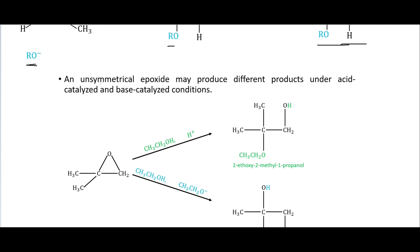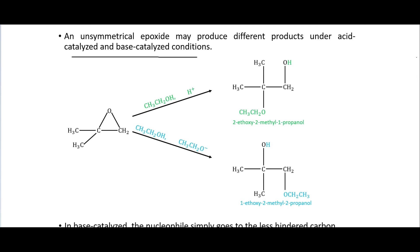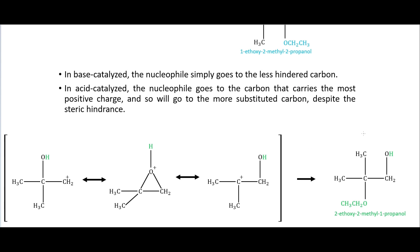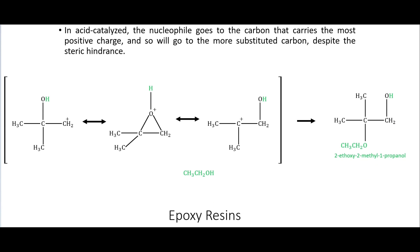The unsymmetrical epoxide can produce different products under acid-catalyzed and base-catalyzed conditions. With acid-catalyzed, we got the product where the ether ended up on the more substituted carbon. With base-catalyzed, we ended up with the ether on the less substituted carbon. In base-catalyzed, the nucleophile simply goes for the less hindered carbon. In acid-catalyzed, the nucleophile goes to the carbon that carries the most positive charge, so it goes to the more substituted carbon despite steric hindrance. We have our resonance structures here, and the major resonance structure is the one with the positive charge on the more substituted carbon. So we bring in our alcohol, it attacks that carbon, and we end up with the ether on our more substituted carbon.